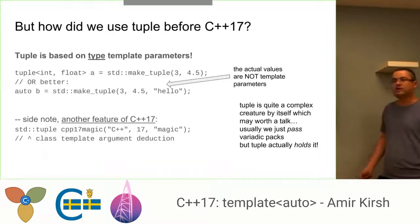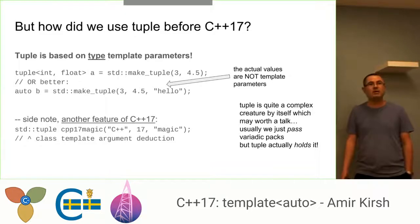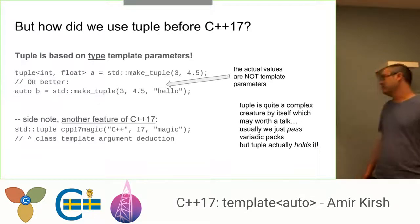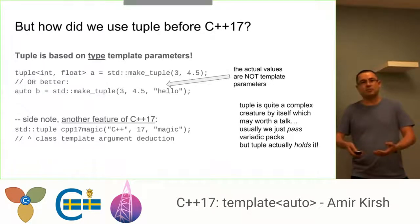So if you take a look at tuple, tuple takes the actual values in runtime as function parameters or as constructor parameters. There is something nice in C++17. You don't have to use make_tuple. You can just call the constructor, send the actual parameters that you want, and rely on class template argument deduction. We'll not talk about that right now.